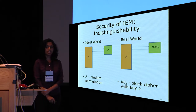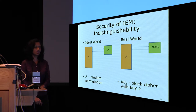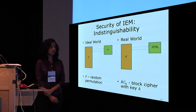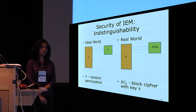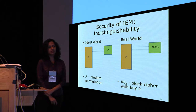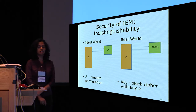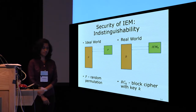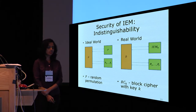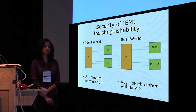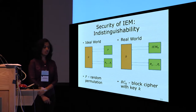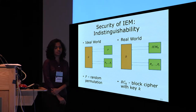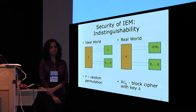The security of the iterated Even-Mansoor (IEM) construction can also be studied under indistinguishability. Here, the distinguisher D in the ideal world interacts with a random permutation P, and in the real world interacts with the IEM construction under a fixed key k. Since the round permutations of IEM are public, the distinguisher D can also have access to these public round permutations p1 through pr.